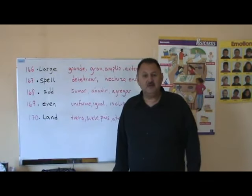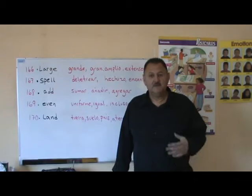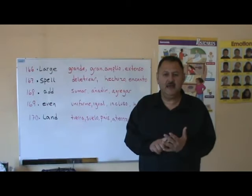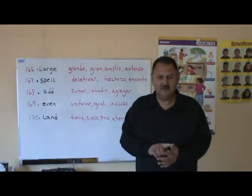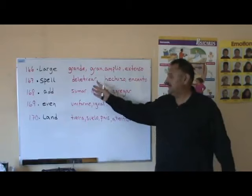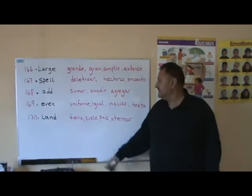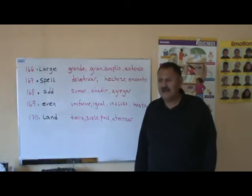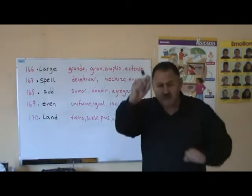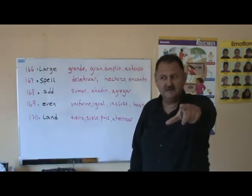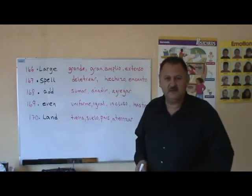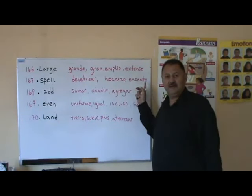Spell. How do you spell your last name? My name's Isaac — I-S-A-A-C. That's how you spell it. Spell, to spell: deletrear. Spell also means, like in witchcraft, when somebody makes a spell — hocus pocus. That is a hechizo, a spell, like a wizard's spell, a witch's spell. Hechizo, o encanto.